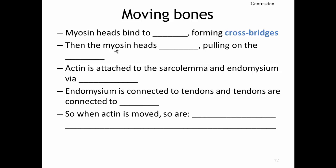The myosin heads bind to actin forming cross bridges, then the myosin heads pull on the actin. Actin is attached to the sarcolemma and the endomysium via costameres, including dystrophin protein. Endomysium is connected to tendons, and tendons are connected to bones. So when actin is moved, the costameres are moved, the sarcolemma is moved, the endomysium is moved, tendons are moved, and most importantly, bones are moved. This is how we move our bones.